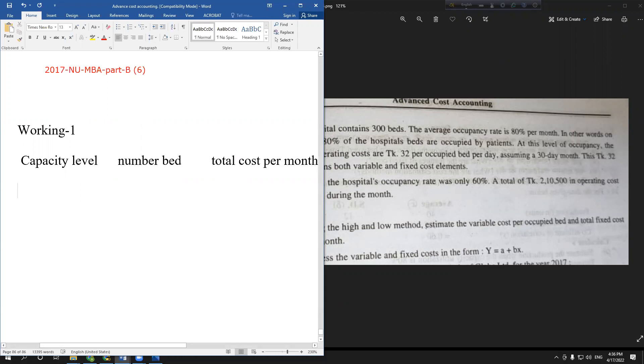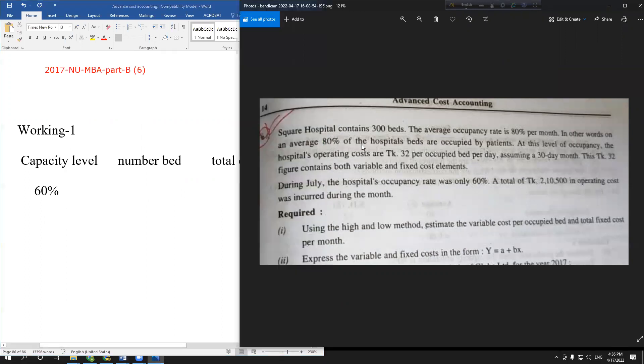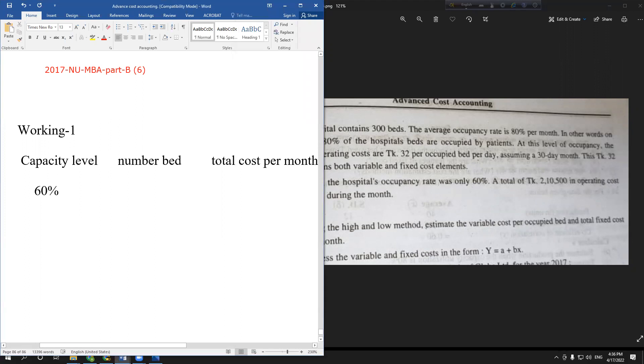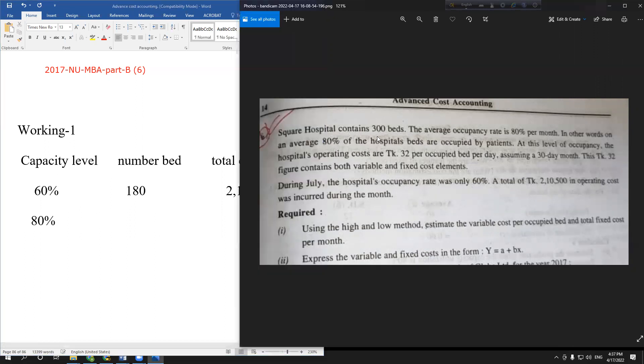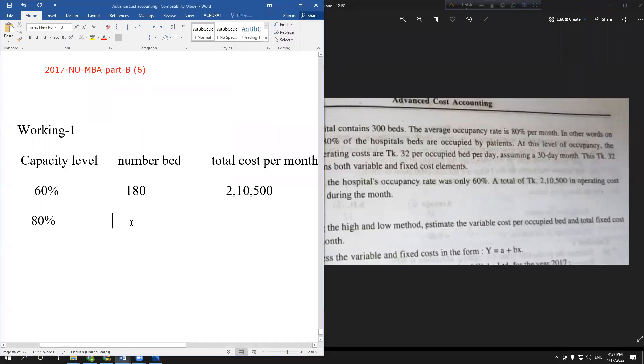At 60% capacity level, the number of beds is 180. At 80% capacity, we calculate 80% of 300 beds, which equals 240 beds.